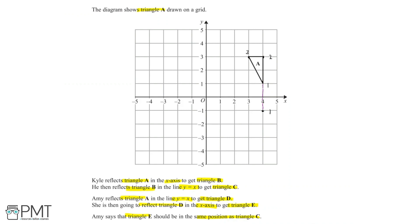We can do the same thing for point 2. Point 2 is 3 squares above the x-axis, so looking for 3 squares below, we'll get the point right here. Finally, we have point 3. Point 3 is 3 squares above the x-axis at the point x equals 3, so let's do the same thing on the other side and go 3 squares below. We can now join these dots together and call this triangle B — a reflection of triangle A in the x-axis.